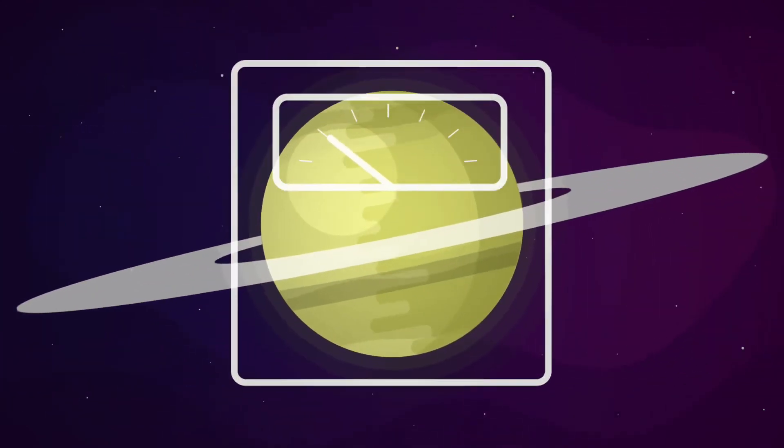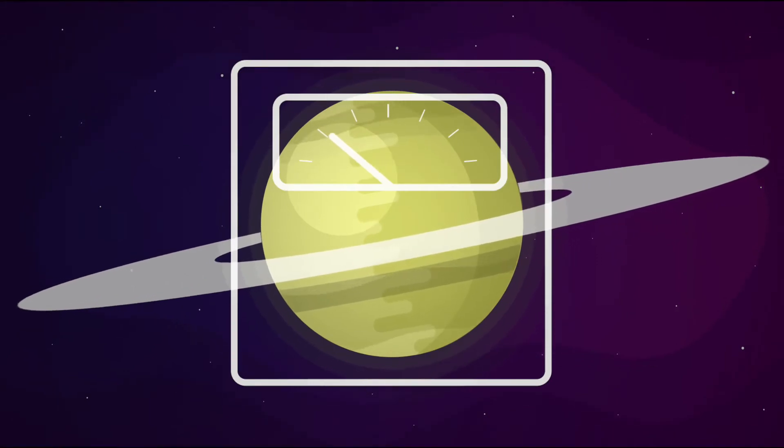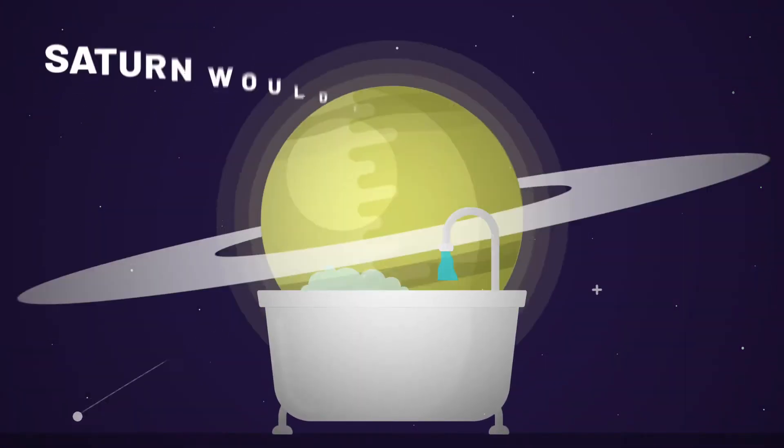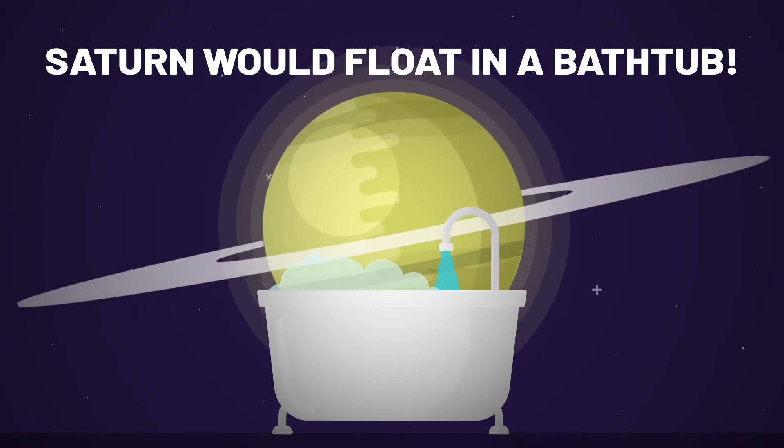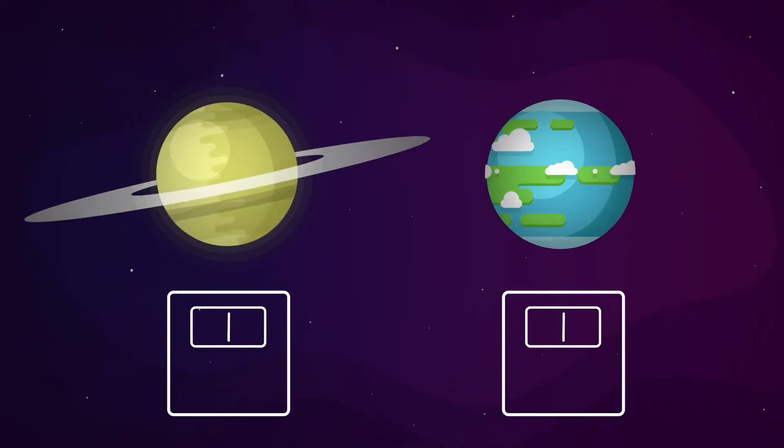Despite its giant size, Saturn is surprisingly light. If you could construct a massive cosmic bathtub, Saturn would even float in it. And this means little change to your weight, too. If you left Earth 100 pounds, you'll only weigh around 106 when you arrive on the ringed planet.